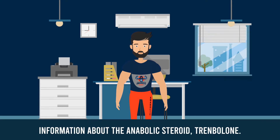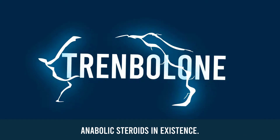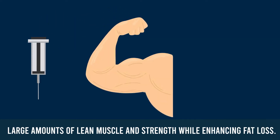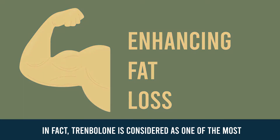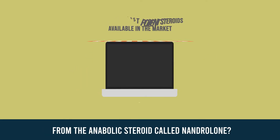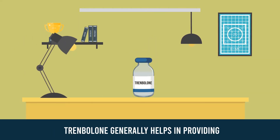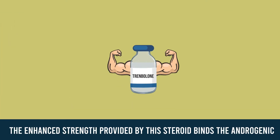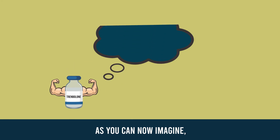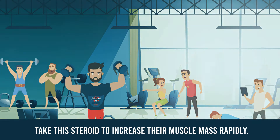In this video I will share with you the most important information about the anabolic steroid trenbolone. Trenbolone is one of the most powerful anabolic steroids in existence. It is an injectable anabolic steroid used to gain large amounts of lean muscle and strength while enhancing fat loss. It has been derived from the anabolic steroid nandrolone, and like nandrolone, trenbolone generally helps in providing androgenic strength to the body. The enhanced strength provided by this steroid binds the androgenic receptors very strongly, which helps to build muscles. It is very popular in the field of bodybuilding where bodybuilders take this steroid to increase their muscle mass rapidly.